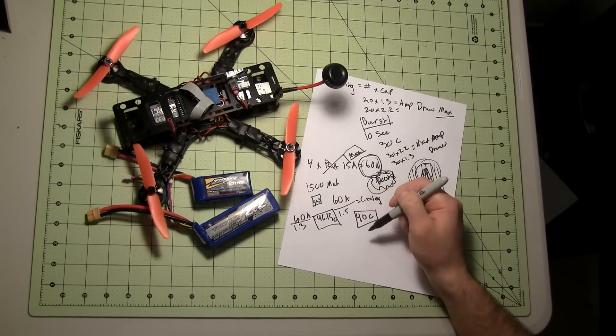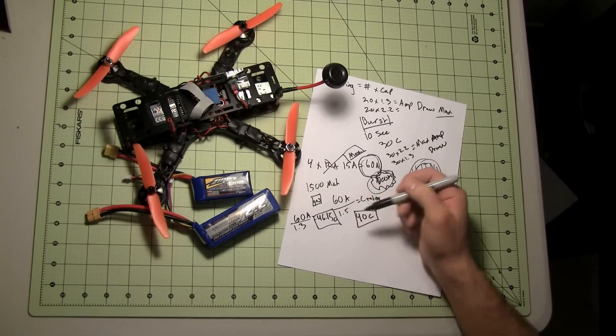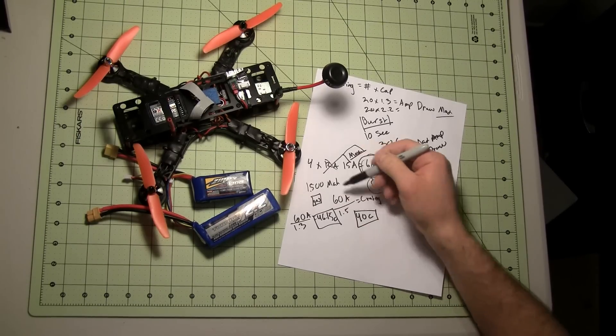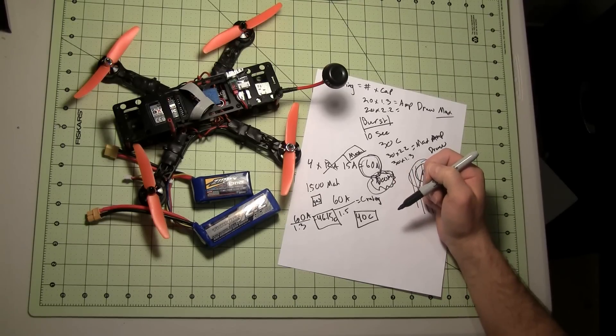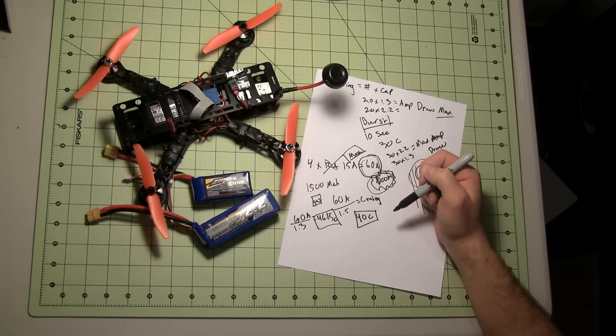And that equals a 46.15C rating. So a 46.15C, I could get a 45C 1300 milliamp battery, but on a 1500 I just only need a 40 amp. What's great about this, it helps you figure out what you need to spend your money on. You don't need to waste money on an 80C rated battery.